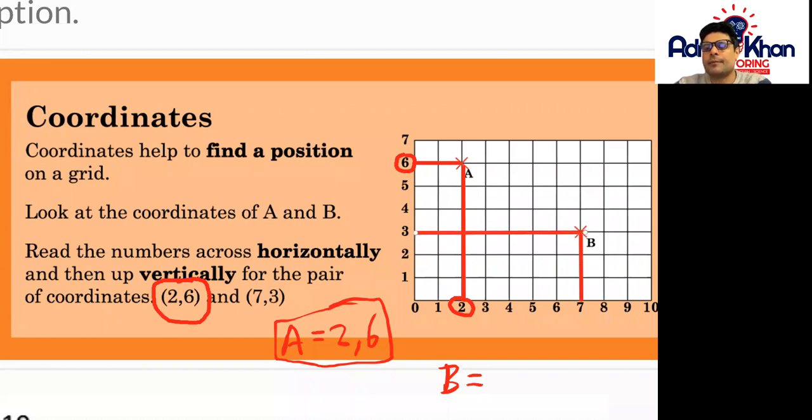There we go. Okay so our coordinates for B are going to be 7 which is on the horizontal axis just down here and then 3 which is on our vertical axis which is just there and our coordinates in this case for B will be 7 comma 3.